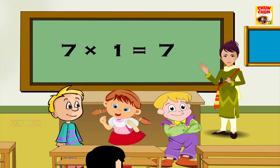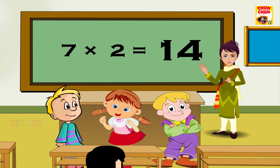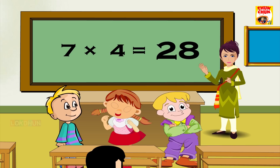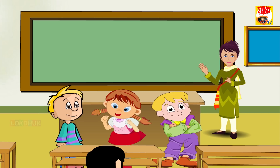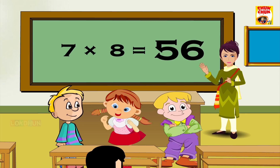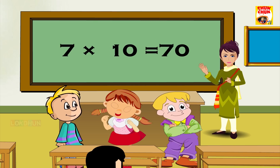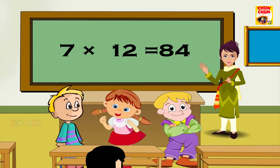7 1s are 7, 7 2s are 14, 7 3s are 21, 7 4s are 28, 7 5s are 35, 7 6s are 42, 7 7s are 49, 7 8s are 56, 7 9s are 63, 7 10s are 70, 7 11s are 77 and 7 12s are 84.